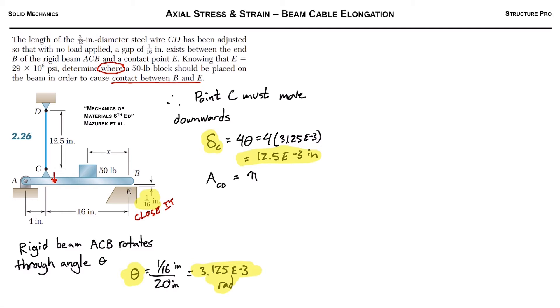Next, we can find the area of our cable ACD just using the simple formula pi d squared over 4. It's just pi r squared, but since d is r over 2, we get r over 4 instead. Calculating that out with a 3 over 32 inch diameter, we get 6.9 times 10 to the negative 3 square inches.